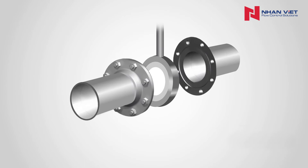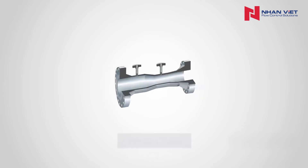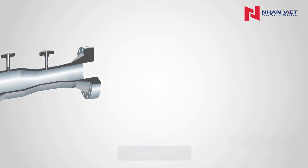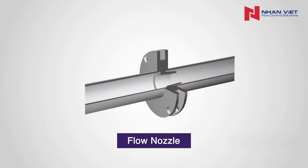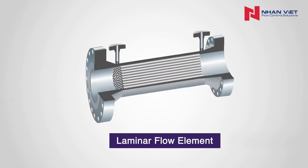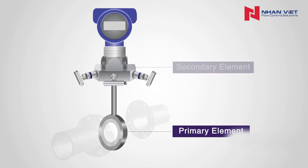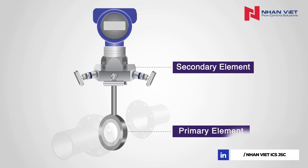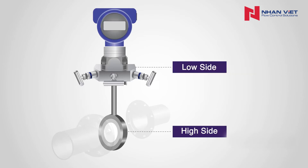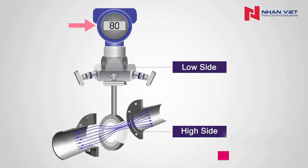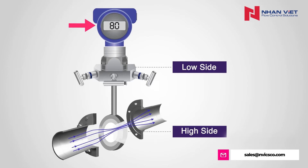Different types of primary elements include orifice plates, venturi tubes, pitot tubes, flow nozzles, laminar flow elements, and wedge elements. The secondary element will measure the difference of pressure produced by the primary element as accurately as possible. The primary element is sometimes called the high side, and the secondary element is called the low side. It is important to remember that the high side and low side aren't always on the respective high and low pressure sides of the pipe.